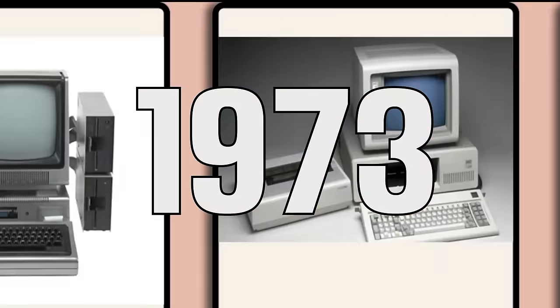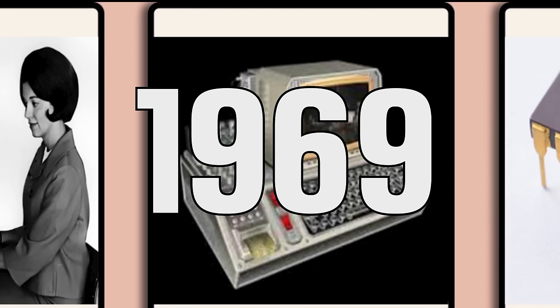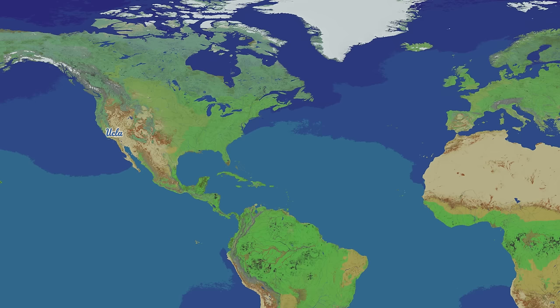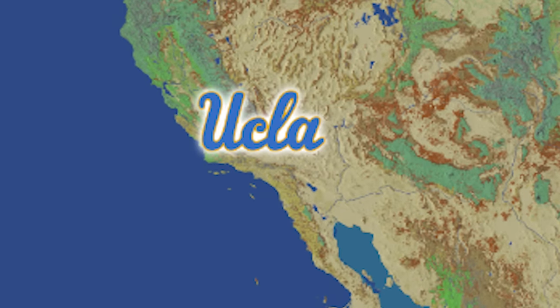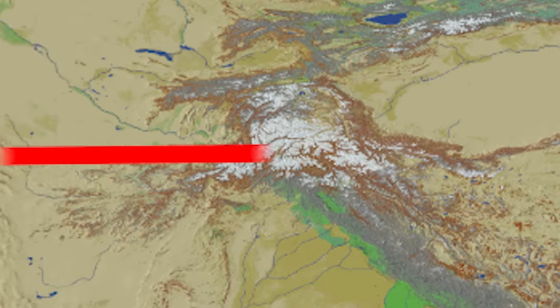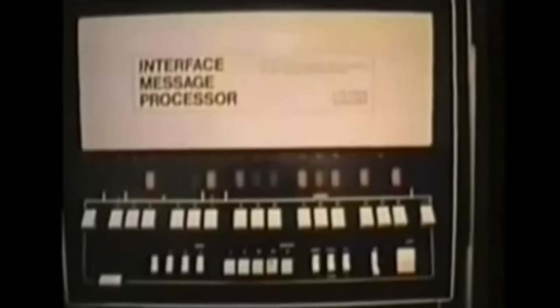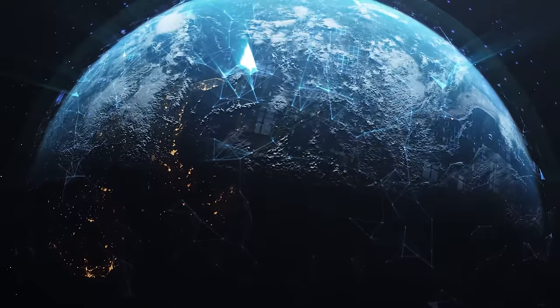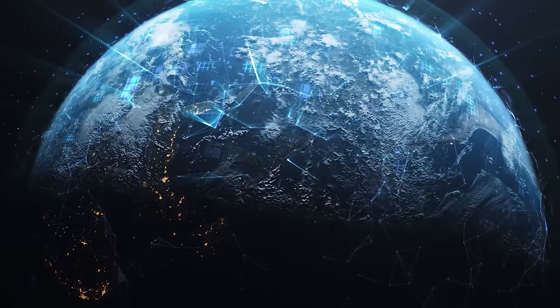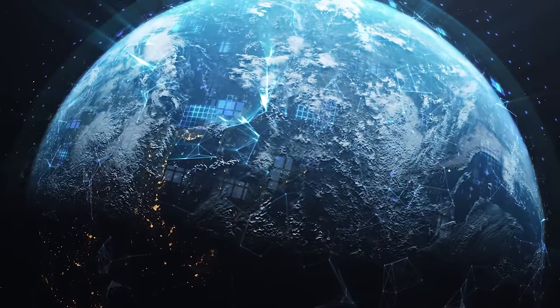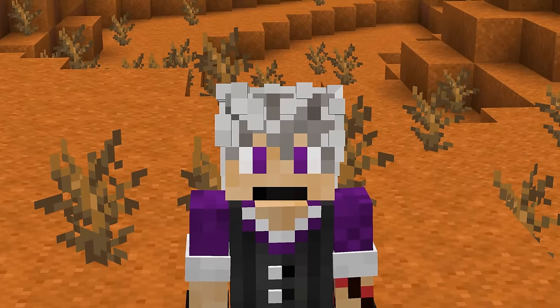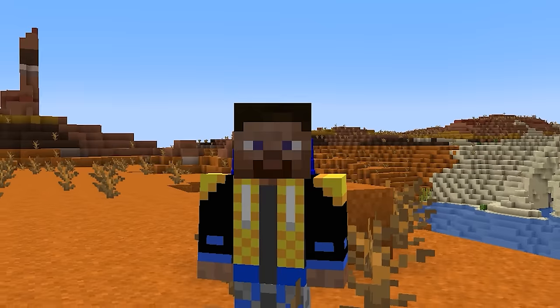It all started way back in 1969 when this dude decided to send a message from one computer in California all the way to another computer in California. And that simple idea of exchanging data across networks turned into today's global data trade we call the internet. But building it in Minecraft wasn't going to be easy.